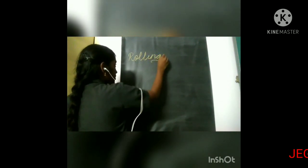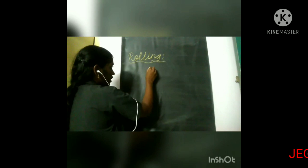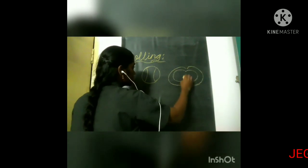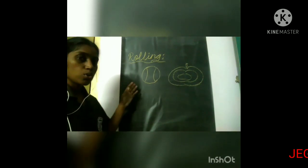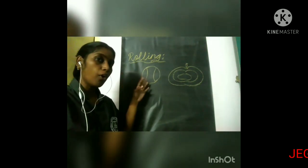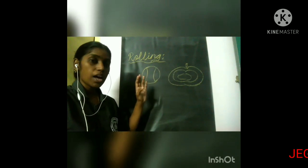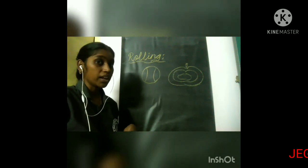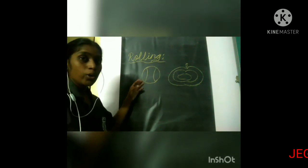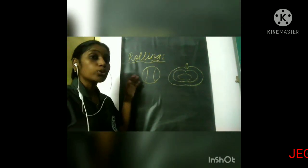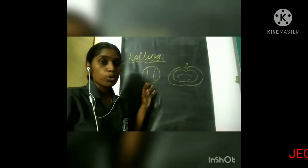Now look at the first one: rolling. I will give you some examples, then only you will understand the concept clearly. Now look here — what is this? A ball. And what is this? It's a pumpkin. Imagine these two objects in your mind — ball and pumpkin. What is the shape of these two things? These two are round in shape. So they easily roll on the slide. These are called rolling objects.